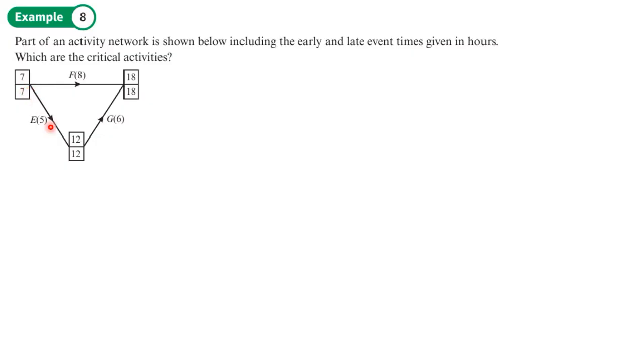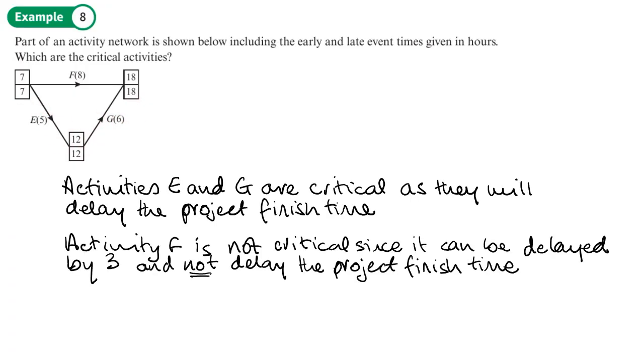However, E being delayed will delay this and G being delayed will delay this. And notice seven plus five is 12, 12 plus six is 18. So activities E and G are critical as they will delay the project finish time. We just look at the values in these boxes here to tell us that and the differences between them. Whereas activity F is not critical since it can be delayed by three and not delay the project finish time.